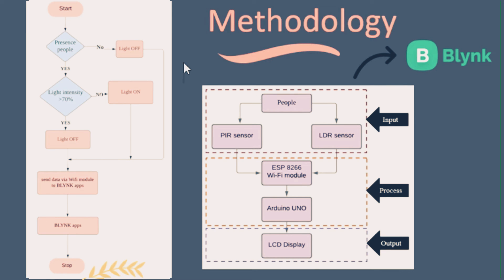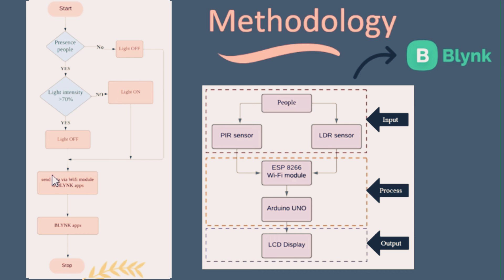For the methodology, when a person enters the room, the PIR sensor will detect their presence. If the light intensity is more than 70%, the light will be off regardless of the person being present. If intensity is not more than 70%, the light will be on. The output will send data via Wi-Fi to the Blynk application.